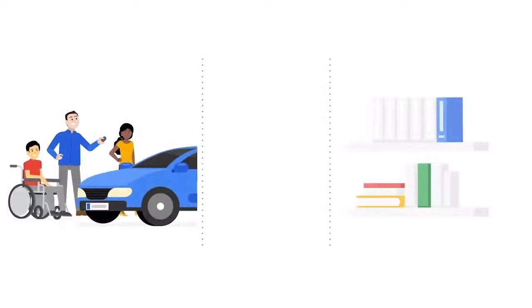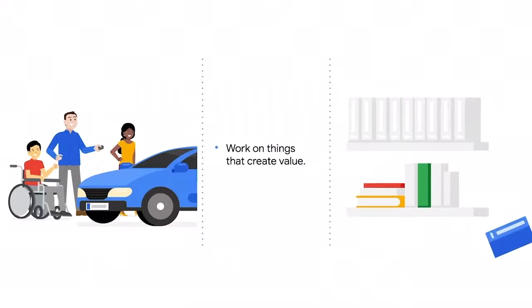The second value emphasizes working software over comprehensive documentation, meaning the team should prioritize spending time on things that actually create value and avoid spending more time than necessary on debating, writing, and reviewing documents. Just replace the term working software with whatever your project is trying to deliver — maybe writing a legal brief, designing an office layout, or preparing a sales presentation. Whatever your project is trying to deliver is the thing that creates value. It's more important to deliver the product the customer wants than to comprehensively document the process that you used.